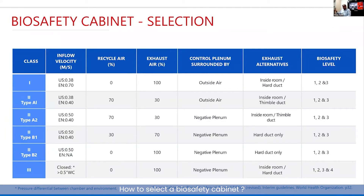For Type A1, the clean zone is surrounded by outside air and therefore the risk of contamination remains — 70 percent of the air gets recycled and 30 percent gets exhausted. Class 2 Type A1 is not generally used nowadays in any of the facilities.